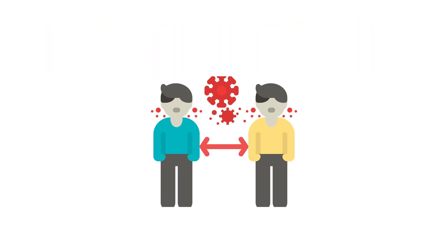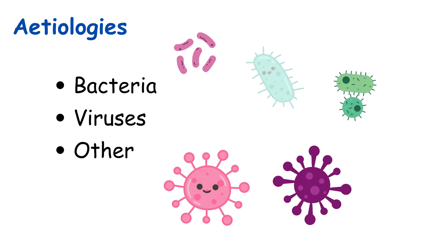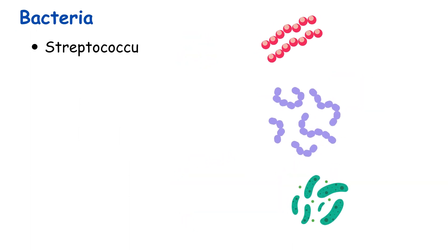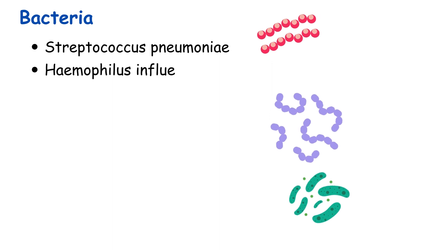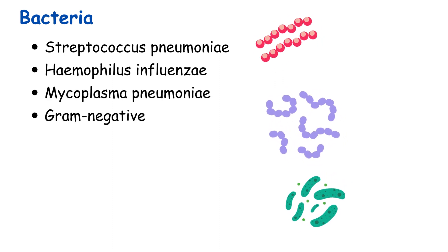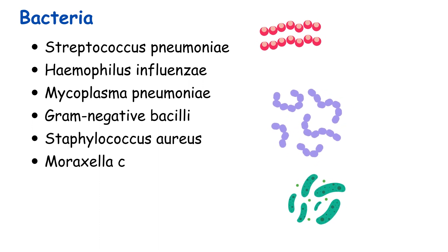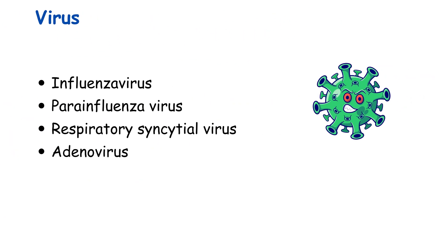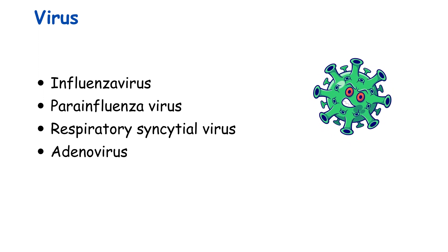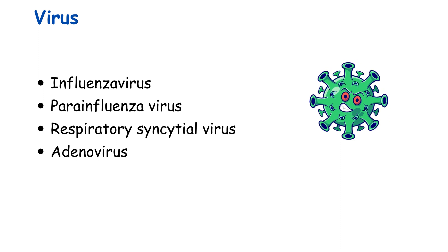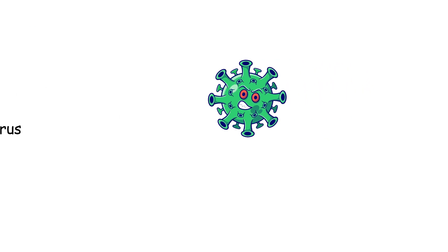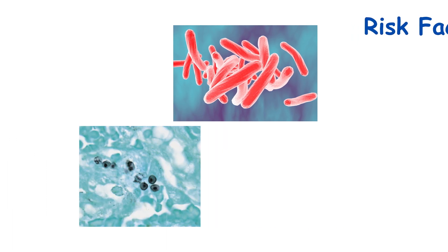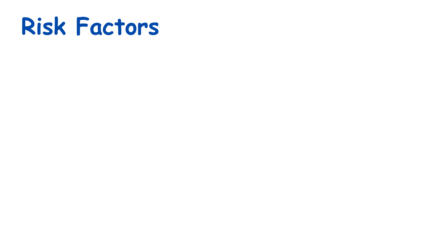For community-acquired pneumonia, there can be bacterial pathogens, viruses, and other types of bacteria. Common bacterial etiologies include Streptococcus pneumoniae, Haemophilus influenzae, Mycoplasma pneumoniae, Gram-negative bacilli, Staphylococcus aureus, Moraxella catarrhalis, Legionella pneumophila, and Chlamydia pneumoniae. Influenza virus, parainfluenza virus, respiratory syncytial virus, and adenoviruses can also cause community-acquired pneumonia. Mycobacterium tuberculosis and Pneumocystis carinii can cause community-acquired pneumonia as well.